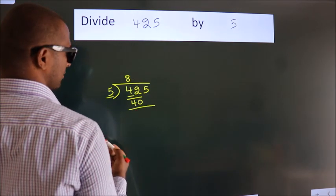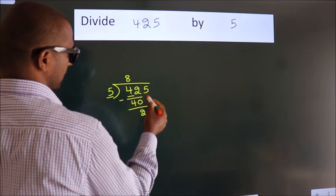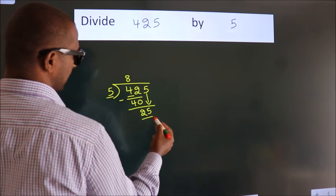Now, we should subtract. We get 2. After this, bring down the next number. So, 5 down. So, 25.